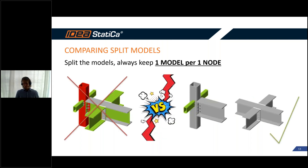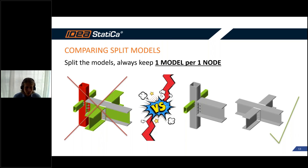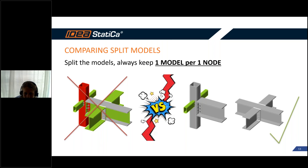So that's the conclusion and we're getting to the end. One rule to remember from today: if we have two nodes, we always split the models and keep just one model in IDEA StatiCa Connection per one node in your structure model. This ensures you're always safe, the input is always simple, and there's no way to go wrong.